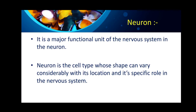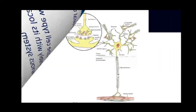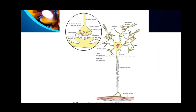What is a neuron? A neuron is the major functional unit of the nervous system. It is the cell type whose shape can vary considerably with its location and its specific role in the nervous system.